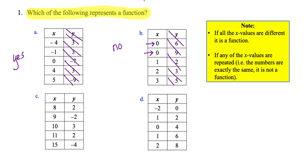There is one exception to this rule — I don't think this will show up on the test, but I'll go over it now. There is one situation where you could have the x values repeated and it's still a function: that's if both repeated x values map to the same y value. For example, if both x values went to 6, it would still be a function. I rarely see that, so I wanted to throw it in just in case.